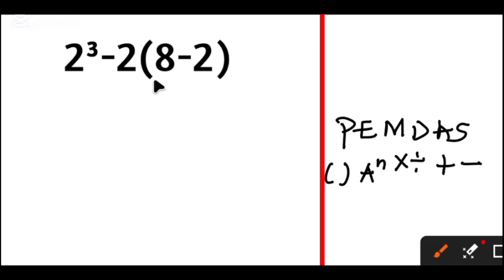So in this equation, we begin with the one in parenthesis: 8 minus 2 equals 6.